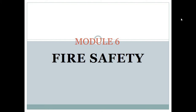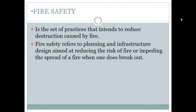The next module we will be talking about is fire safety. Having a fire in a place is one of the most highly preventable situations, if and only if we follow all the safety regulations and use our common sense and awareness in looking out for possible fire hazards. Prevention and control of fire hazards should always be part of a safety program in each workplace and even in our own homes. Fire safety is a set of practices that intends to reduce destruction caused by fire, and also refers to planning and infrastructure design aimed at reducing the risk of fire or impeding the spread of a fire when one does break out.